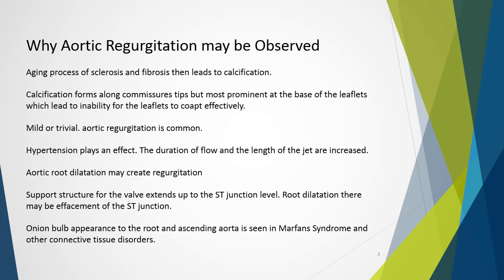The most common aortic regurgitation is mild or trivial and arises from the center of the valve where all three leaflets meet. The direction of the jet is usually central. Hypertension plays an effect — the higher the blood pressure, the more significant the jet, as there is greater driving force pushing blood into the ventricle. The duration of flow and the length of the jet typically increase with hypertension.